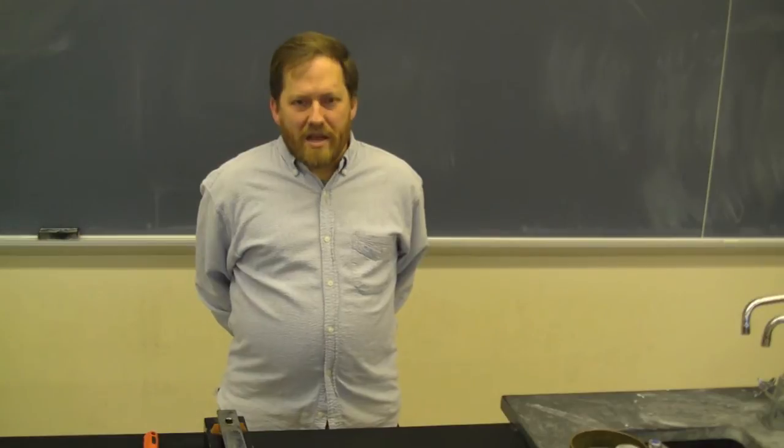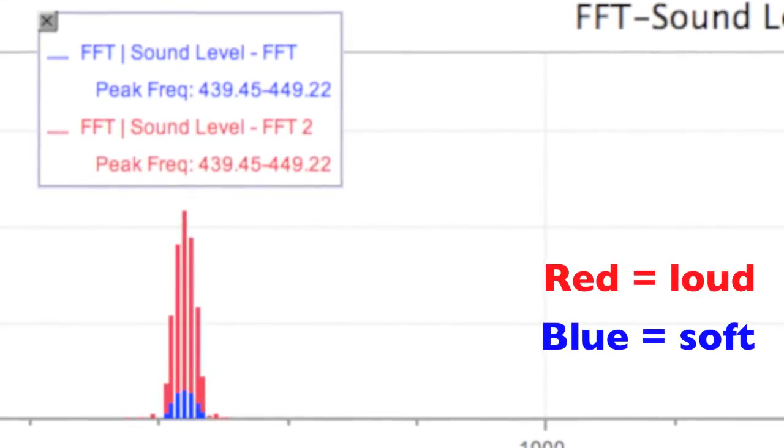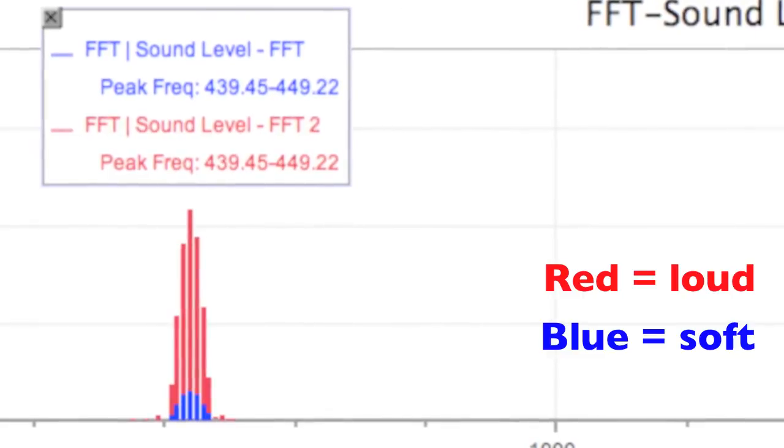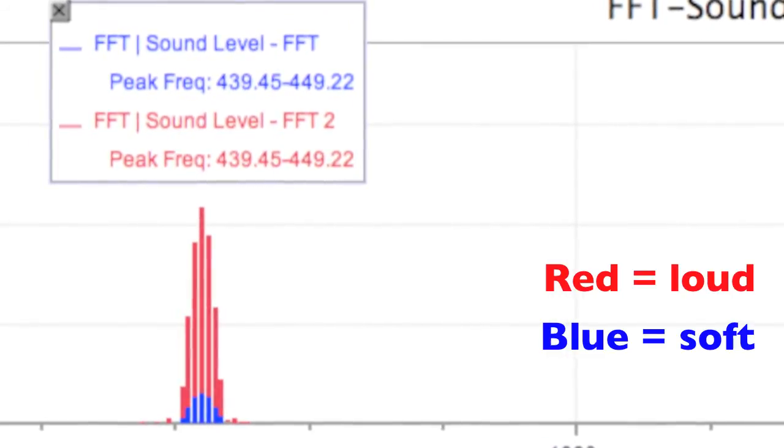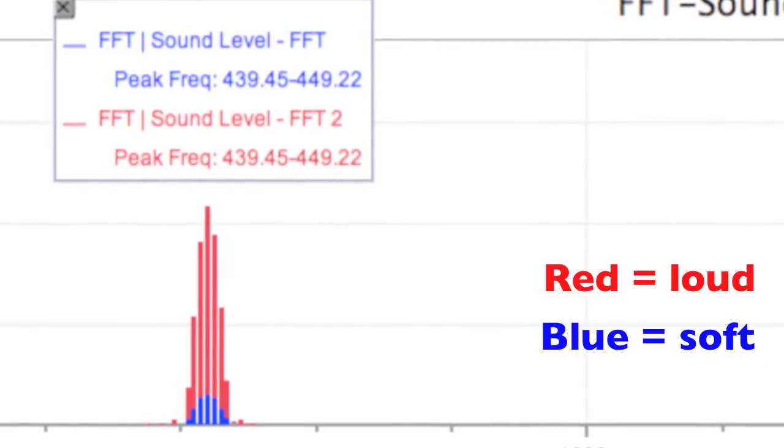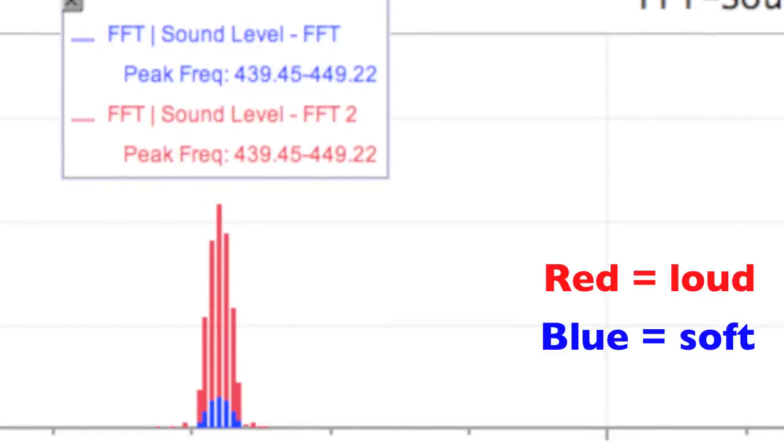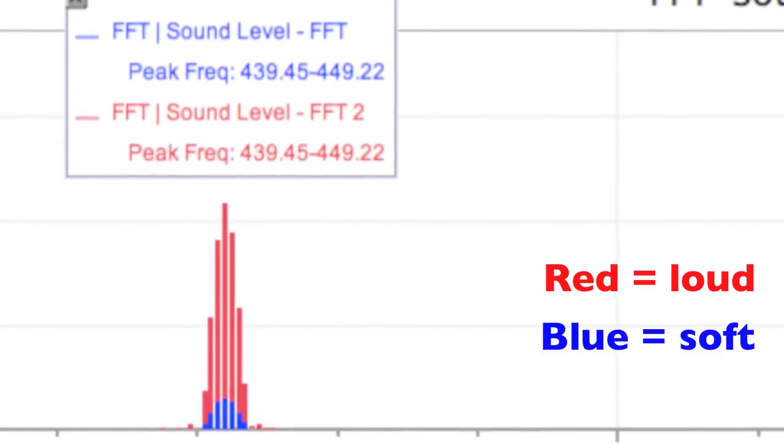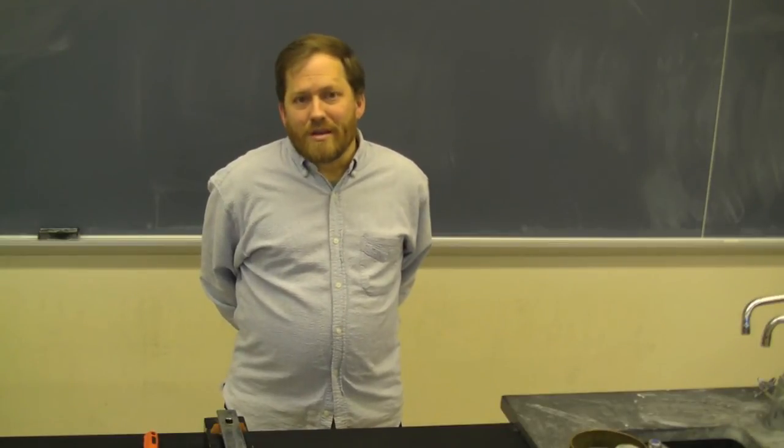Let's take a look at the FFT now. You'll notice on this lower graph that it's basically the same deal. The louder sound is taller. Here it's just a taller peak rather than a taller waveform. And you'll notice the similarity too. Both of the peaks are at the same horizontal position. That's because it was the same note both times.